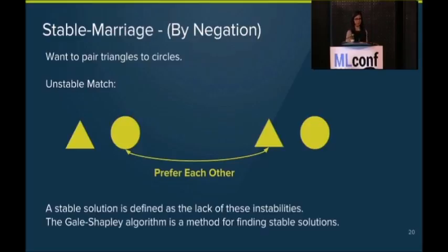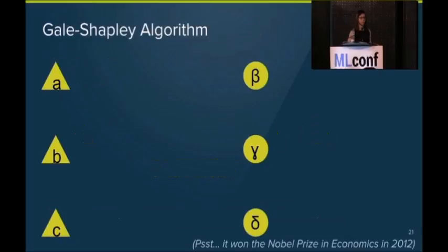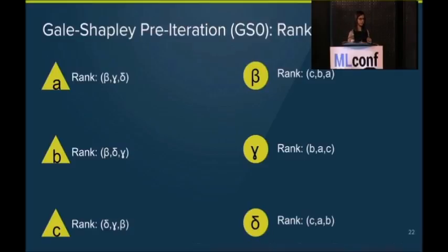So this is actually, I'm going to present the solution, which is the Gale-Shapley algorithm. The algorithm, like he means, is very, very old. It's from the 60s. But it won a Nobel Prize in 2012 in economics for matching residents to medical schools. It's actually a pretty powerful tool. So imagine we have these three triangles, ABC, and we have these three circles, beta, gamma, and delta. Here's what we do first. First, each triangle and circle will rank the opposite one. So A ranks beta, gamma, and delta. You know, beta ranks C, B, and A, et cetera.